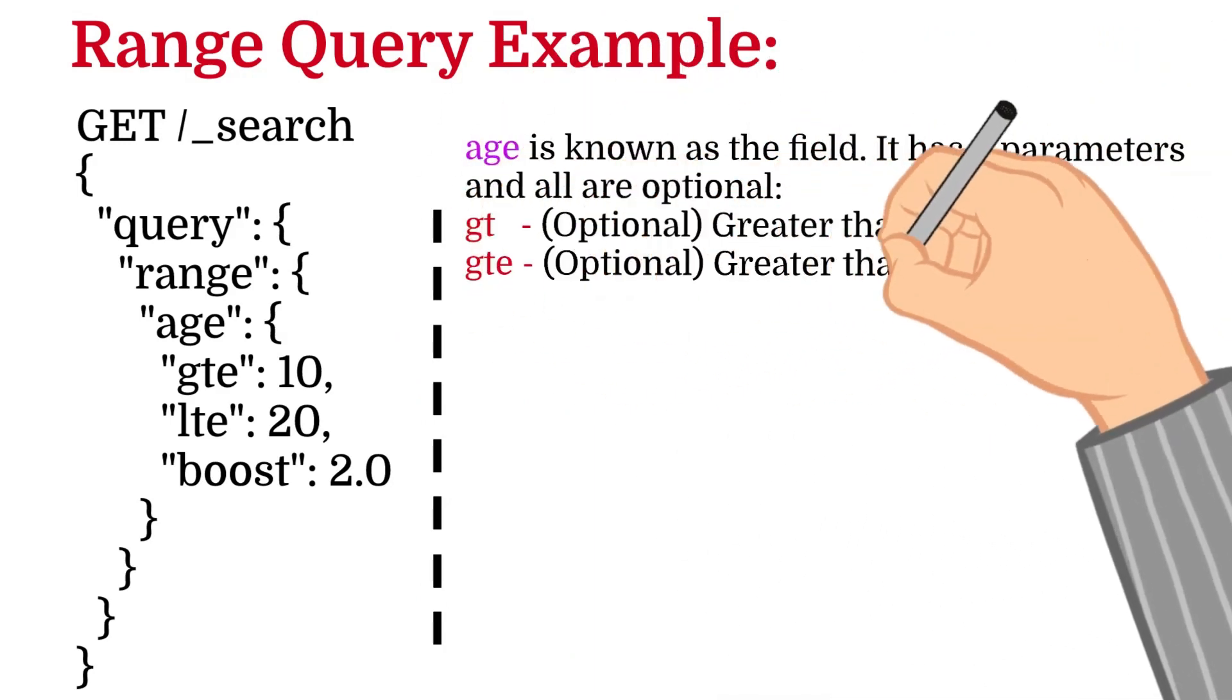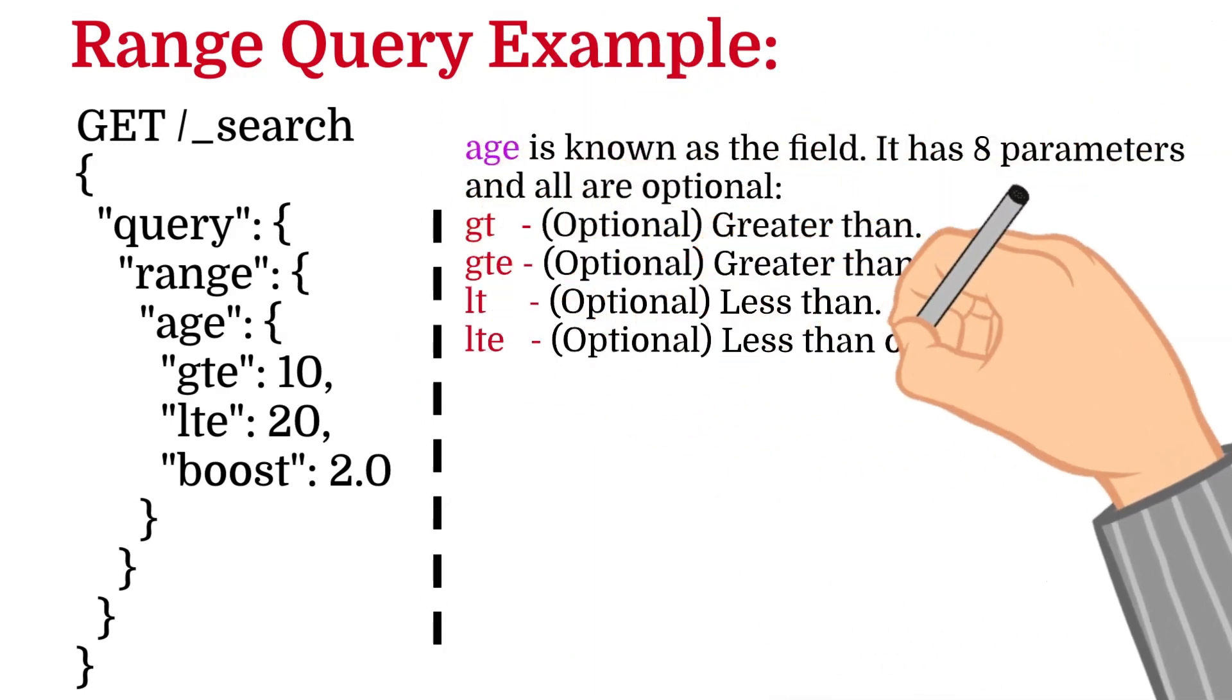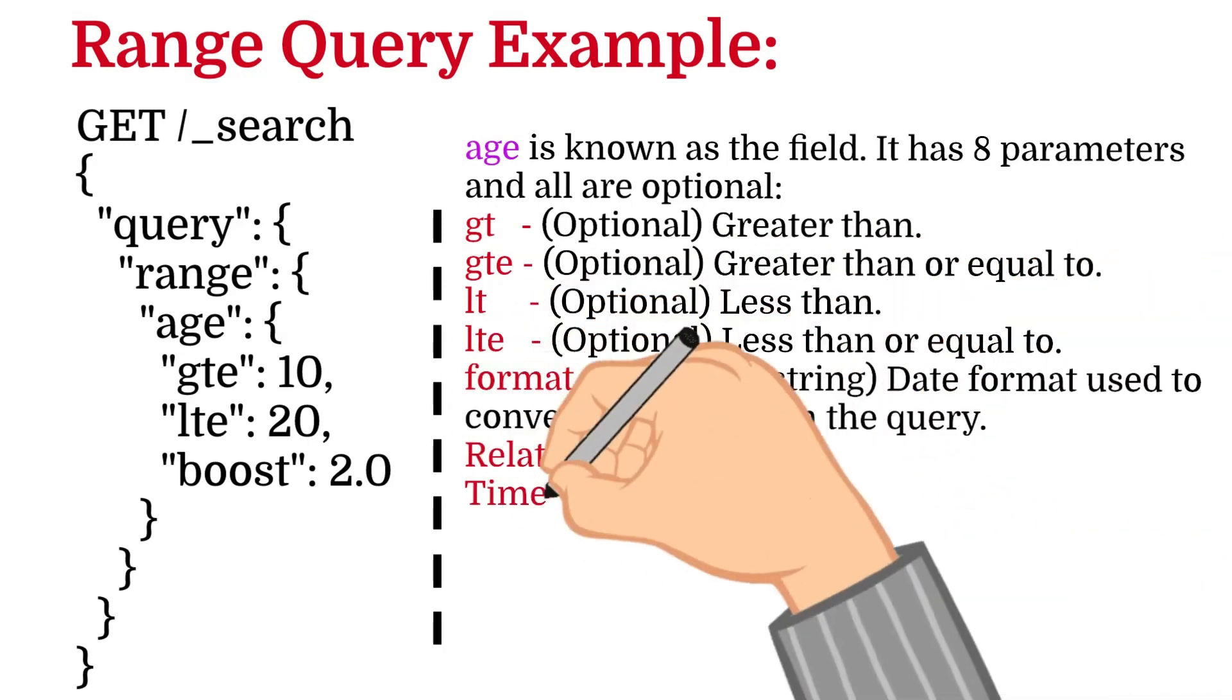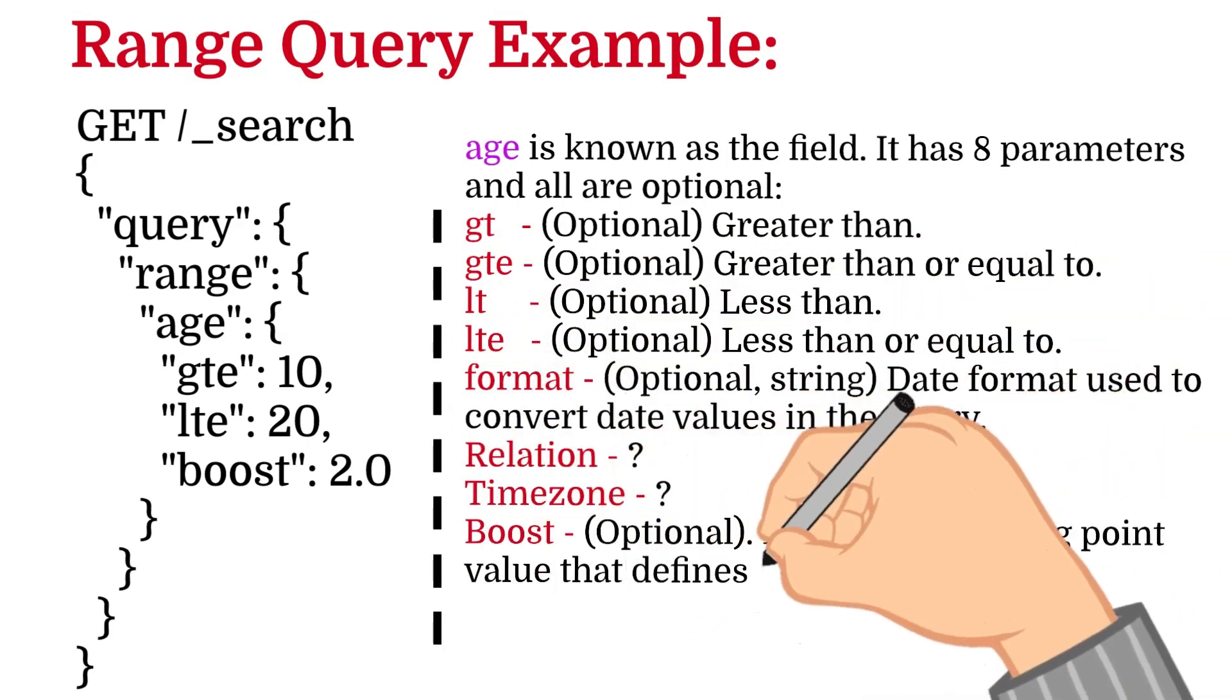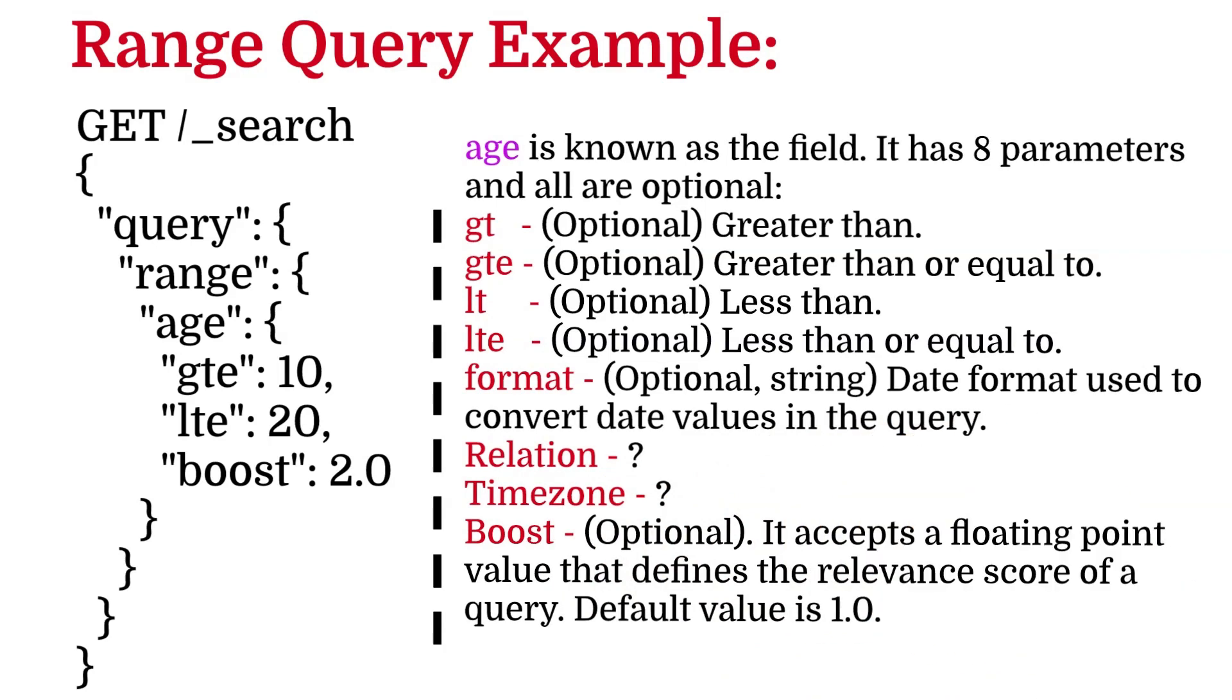The first parameter is GT, that is greater than. This is optional. The second parameter is GTE, all in lowercase, which means greater than or equal to. The third option is LT, that is less than, it is optional. LTE, optional, less than or equal to.